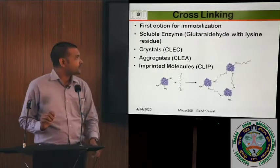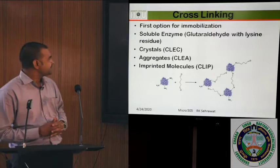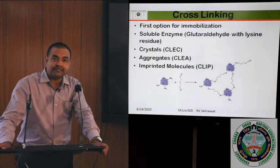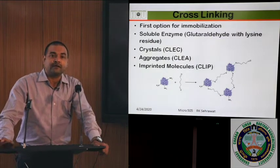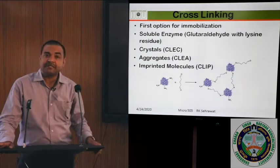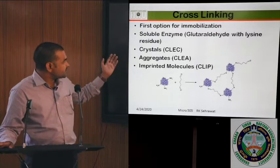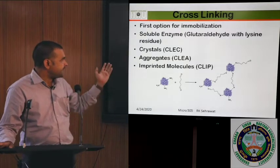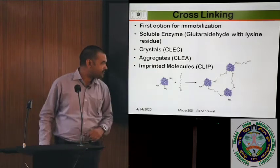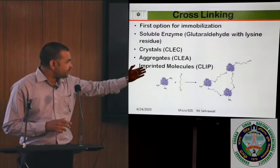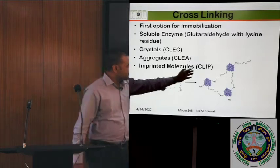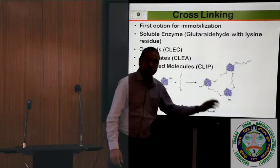Cross-linking is the first option for immobilization. In this, soluble enzymes are used and glutaraldehyde with lysine residue is the most favorable compound for cross-linking of enzymes. You can also form crystals of enzymes — cross-linked enzyme crystals (CLEC) — then cross-linked enzyme aggregates (CLEA), and imprinted molecules like cross-linked imprinted proteins. Glutaraldehyde is used and the enzyme is cross-linked with its help.